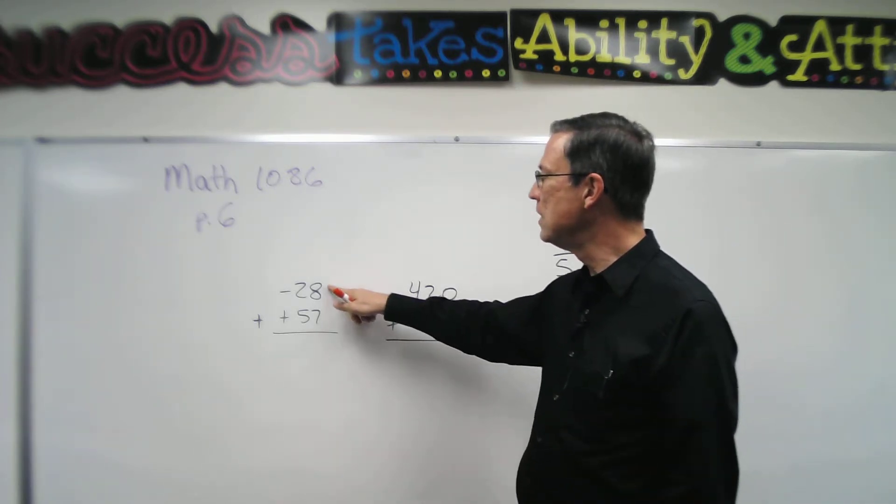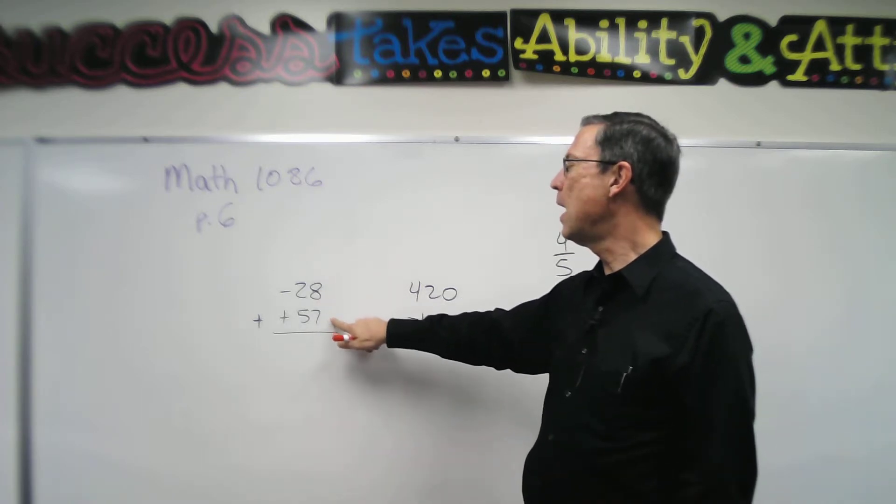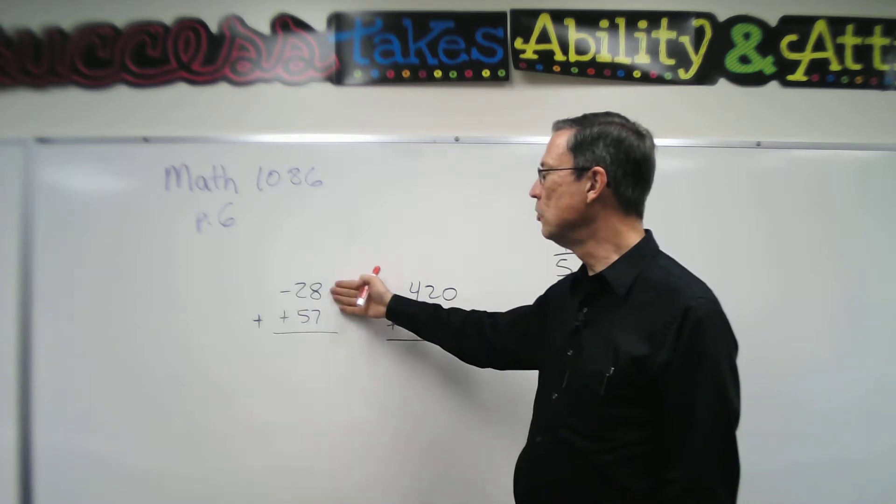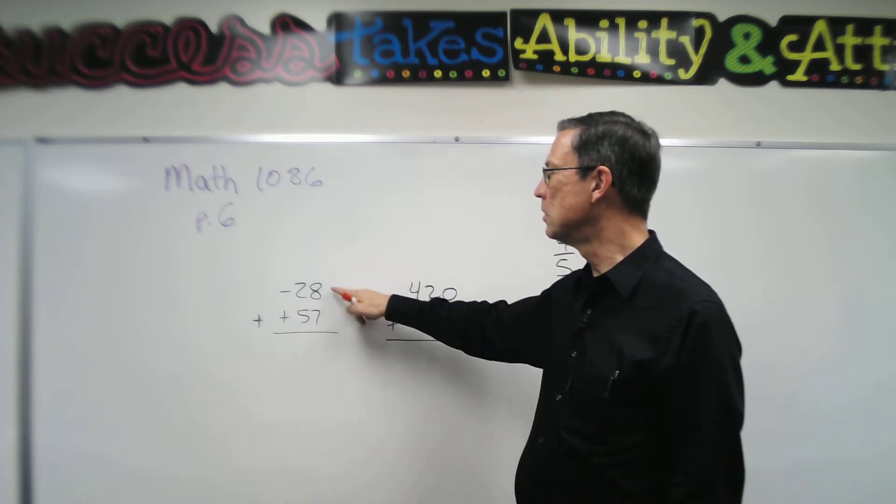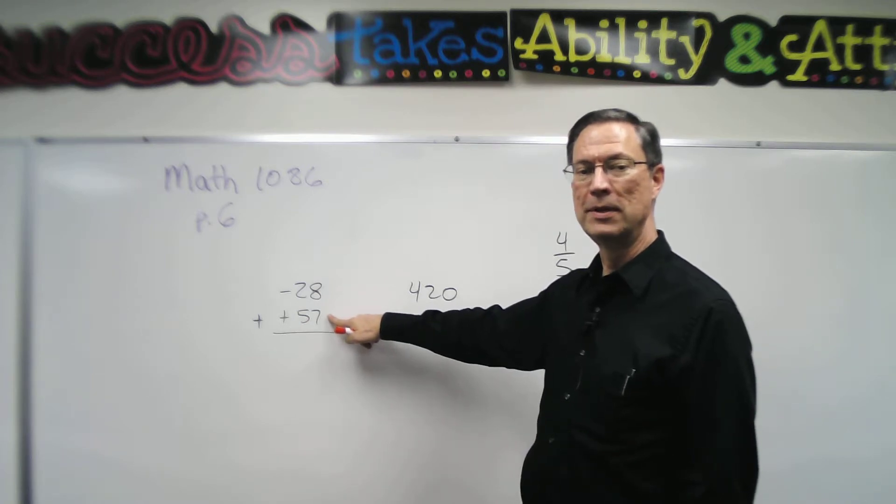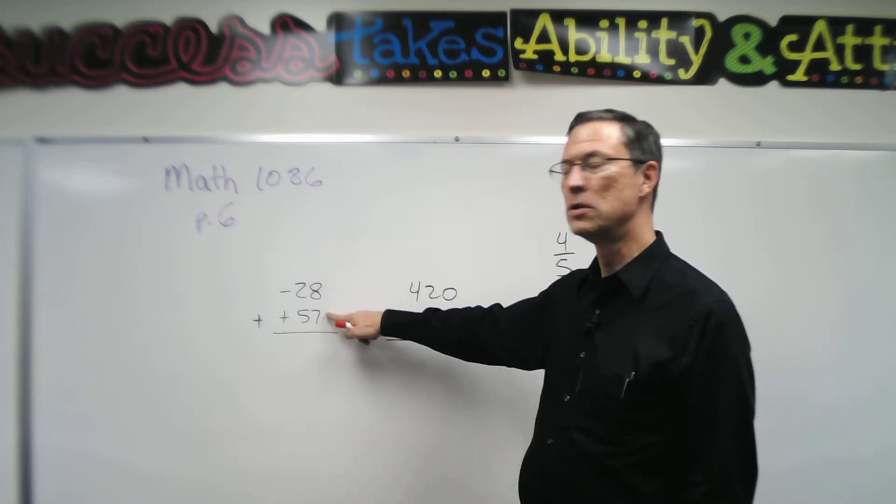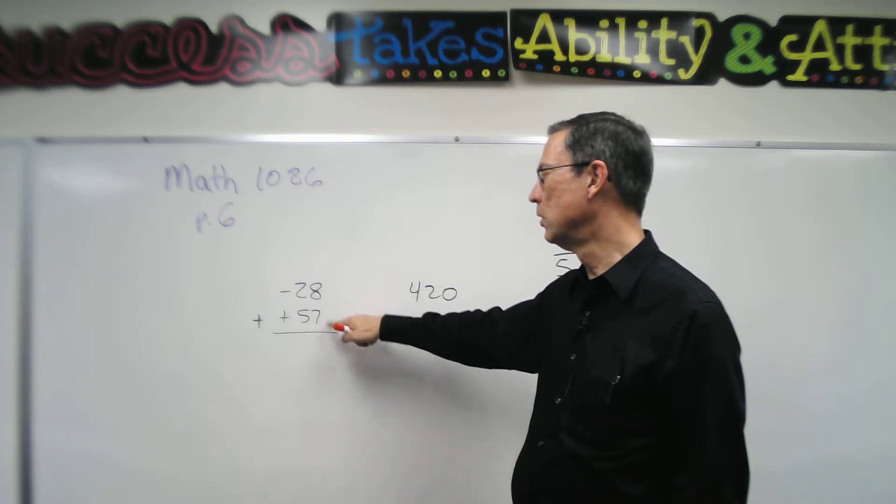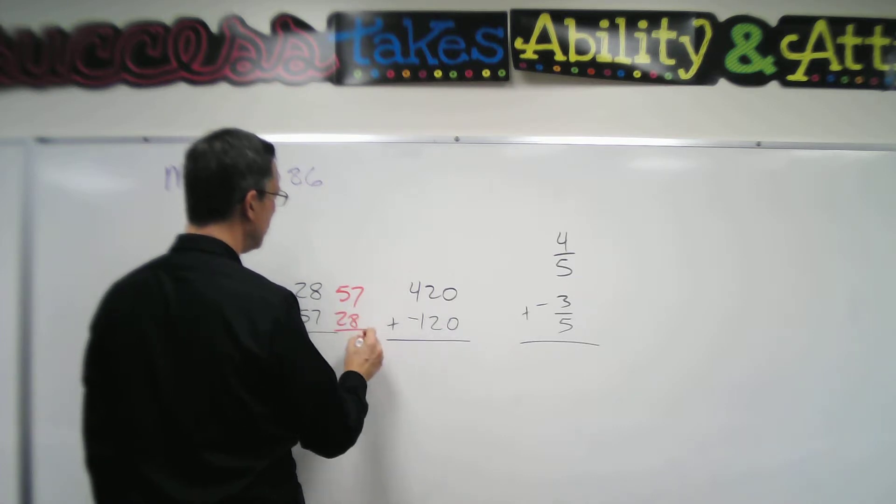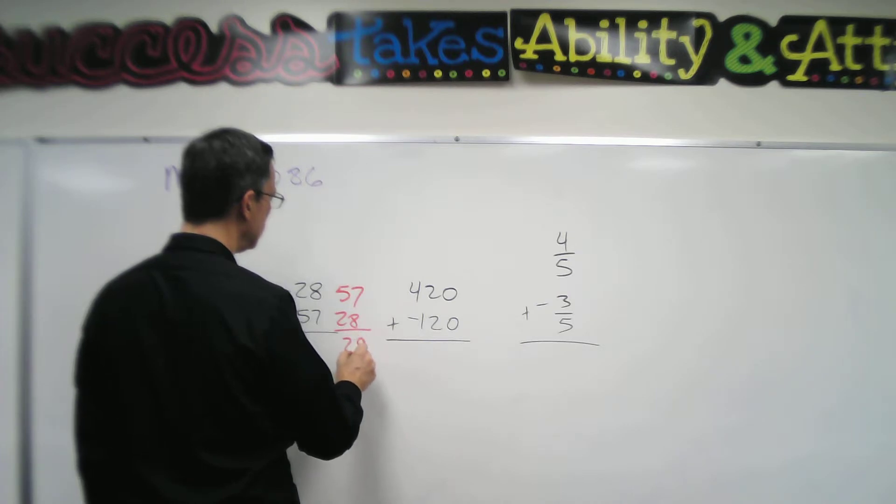So here we have negative 28 and positive 57. The absolute values here - the 28 is smaller than the 57. So we're going to subtract the smaller from the larger. I'm going to rewrite this here next to it as 57 subtract 28. So we get 29.